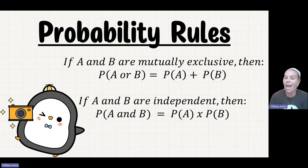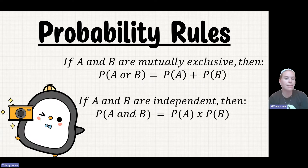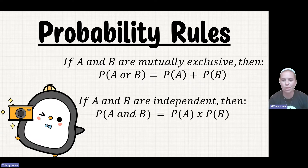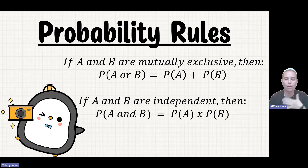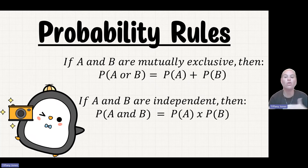And if A and B are independent, then the probability of A and B is equal to probability of A times probability of B. These are usually two independent events. So if we're looking at having cinnabar eyes and vestigial wings, those are not actually dependent on each other, so you would multiply those probabilities together.